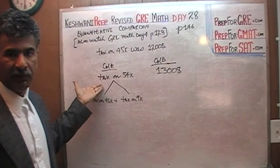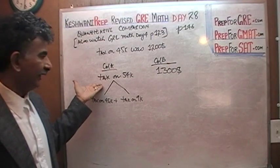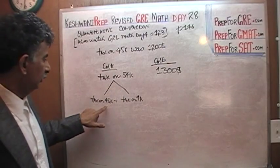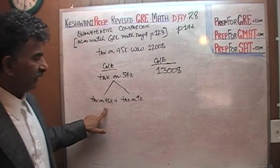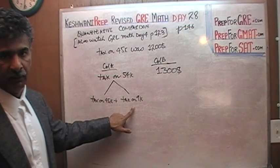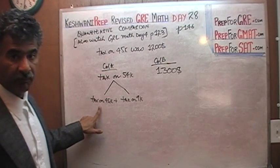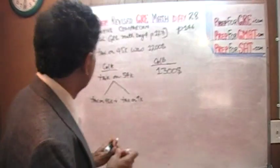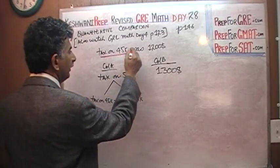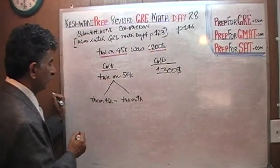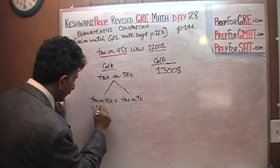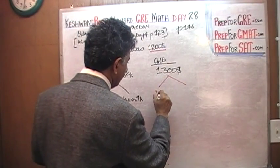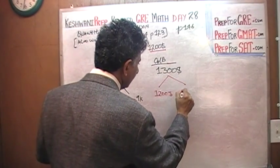The entire assessed value of the property is being taxed. So the tax on $54,000, whatever it is, has to equal the tax on $45,000 plus the tax on the remaining $9,000. But we know what the tax on $45,000 is — we are told the tax on $45,000 is $1,200. So I can replace that: this equals $1,200. And $1,300 can be broken down into $1,200 plus...